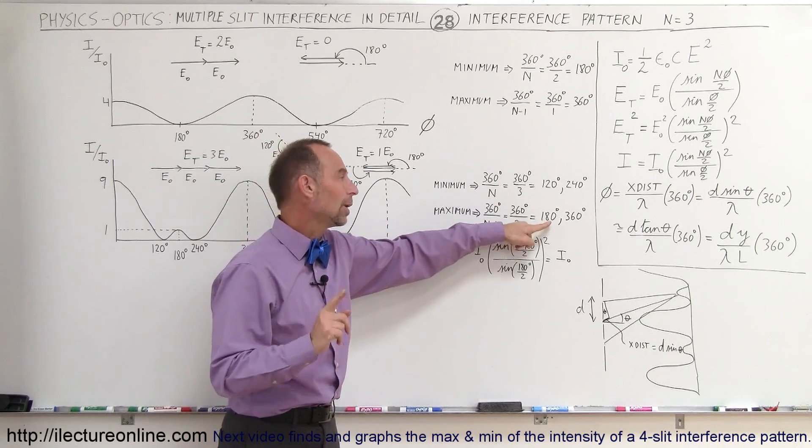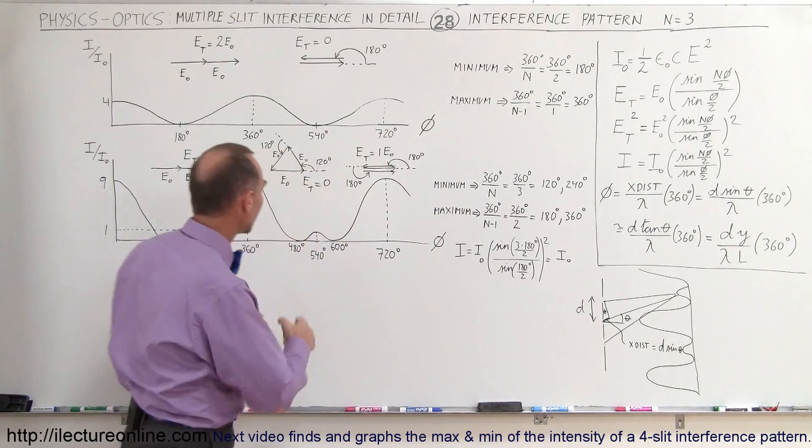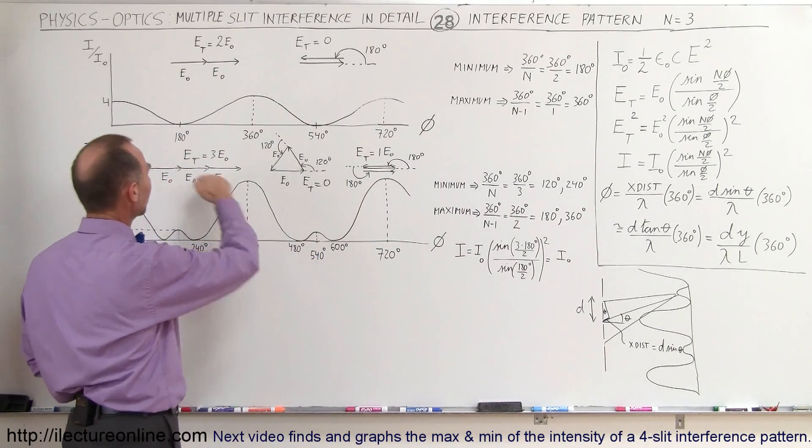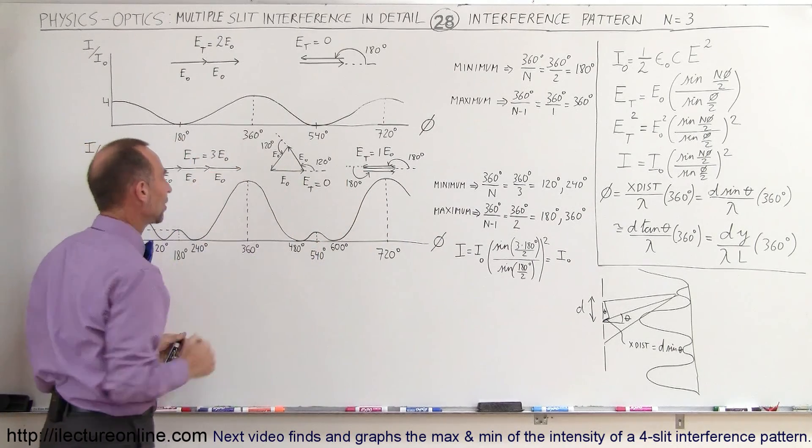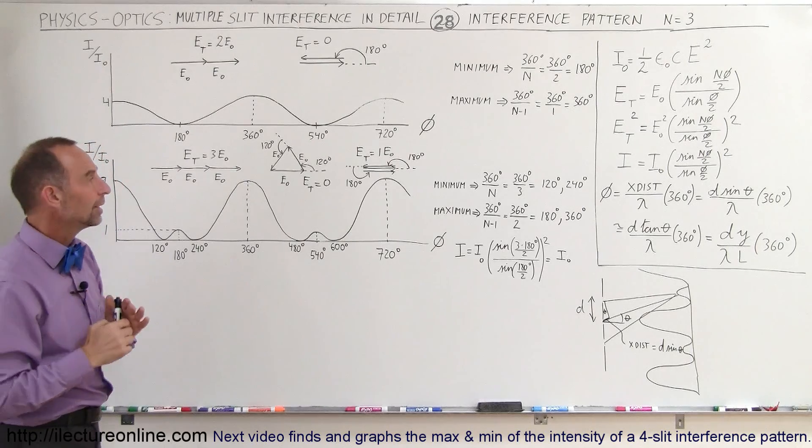So we find a maximum at 180, and we find another maximum at 360. The 360 is a full maximum, because then they're all lined up in the same phase direction. But at 180 degrees,